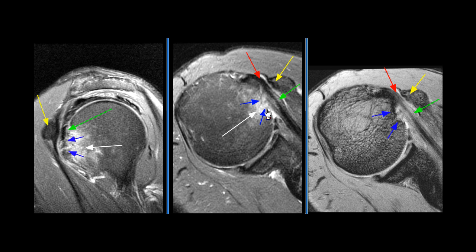There is narrowing of the coracohumeral space between the coracoid process and the humerus. There is severe subscapularis tendinosis with partial tearing of the inferior fibers at the humeral insertion. Bone marrow edema is seen in the lesser tuberosity with cortical erosions.